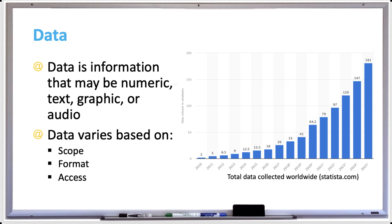Data also varies based on access, so some data sources are public while others are made private. For example, some companies purchase private data in order to learn your shopping patterns and predict what you might buy next.